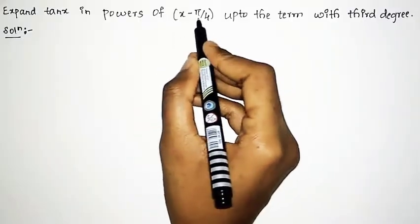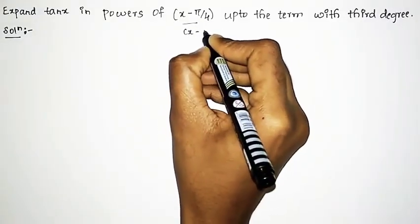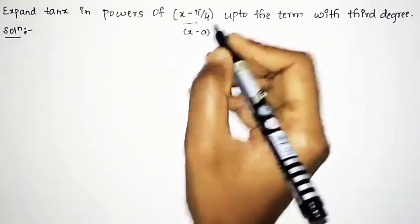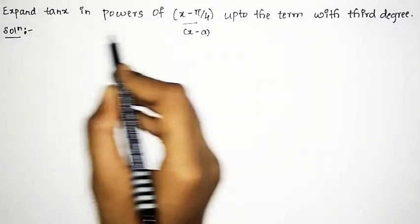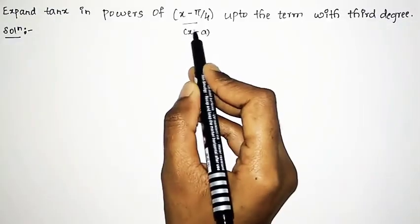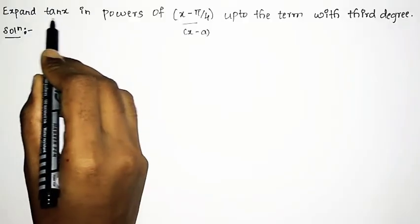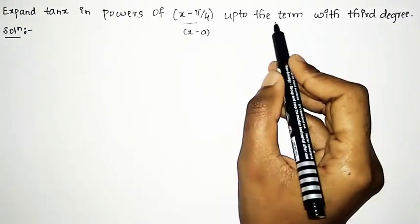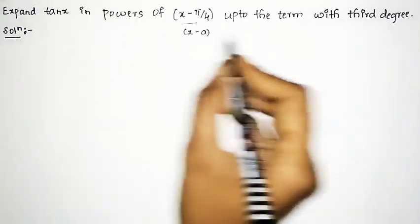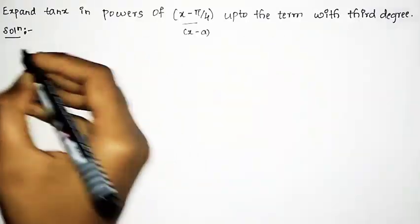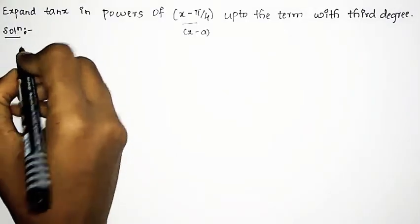By clearly observing, this is of the form (x minus a), which means we can clearly see that it is a Taylor series. So here we need to expand it using Taylor's equation. The given f(x) is tan x and we need to expand it up to the 3rd degree, that is up to x to the power 3. So first we shall write the Taylor series equation.